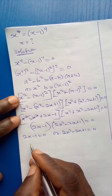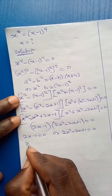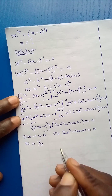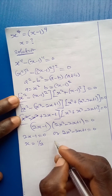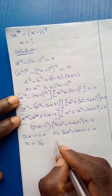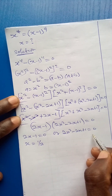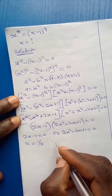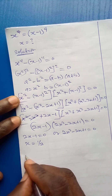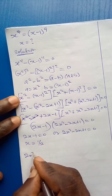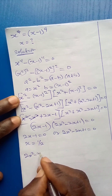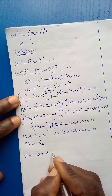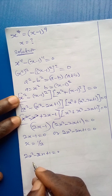Equating each factor to zero: 2x minus 1 equals 0, giving x equals 1 over 2. In the second case, we need to solve the quadratic equation 2x squared minus 2x plus 1 equals 0.